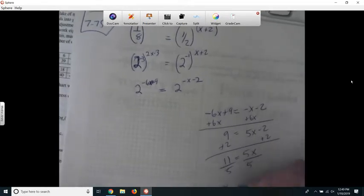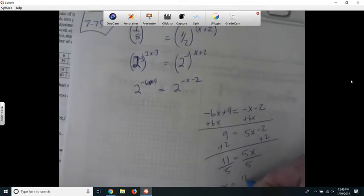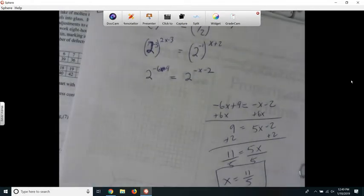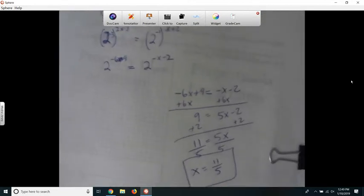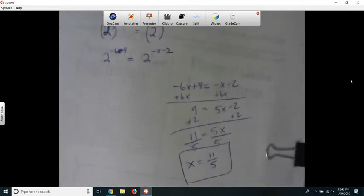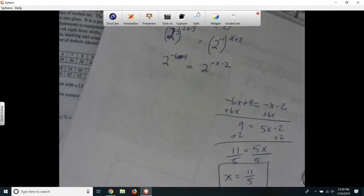So x is 11 fifths, and your book got x equals 11 fifths. So that way worked. Is that okay? Yeah? Okay. I'm going to click...